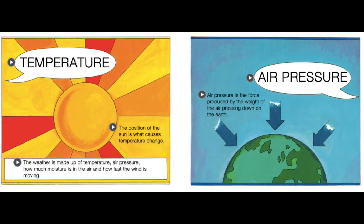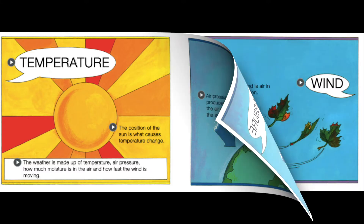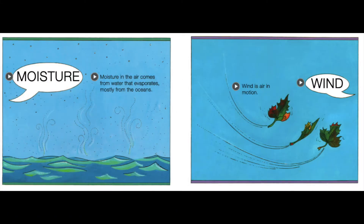Air pressure is the force produced by the height of the air pressing down on the earth. Moisture in the air comes from water that evaporates, mostly from the oceans. Wind is air in motion.